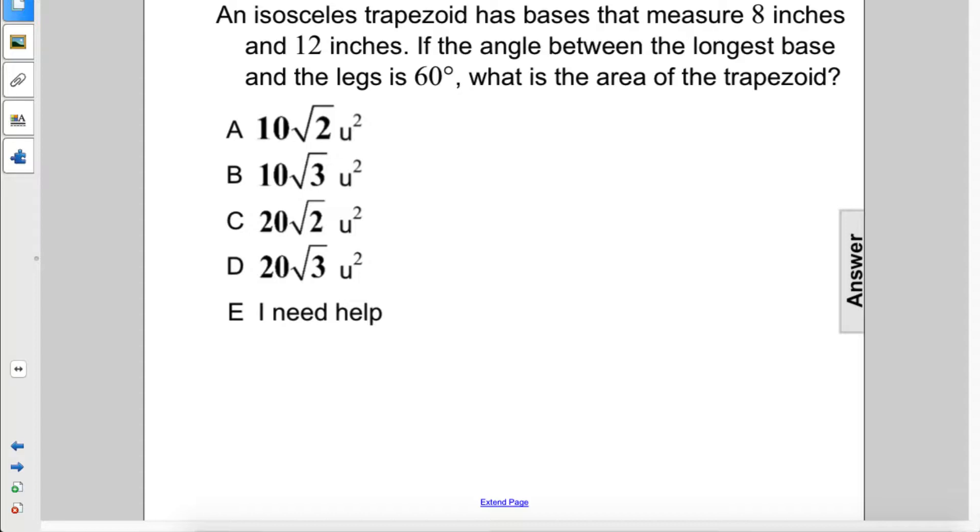Alright, so we're going to draw a trapezoid like that. It's an isosceles trapezoid, so these legs are congruent, and we have these angles at 60 degrees, and I'm just going to drop these lines here.